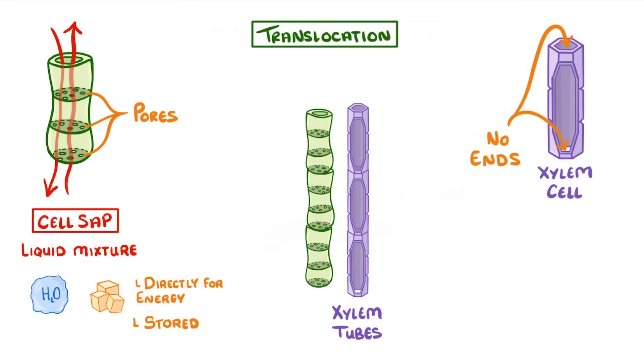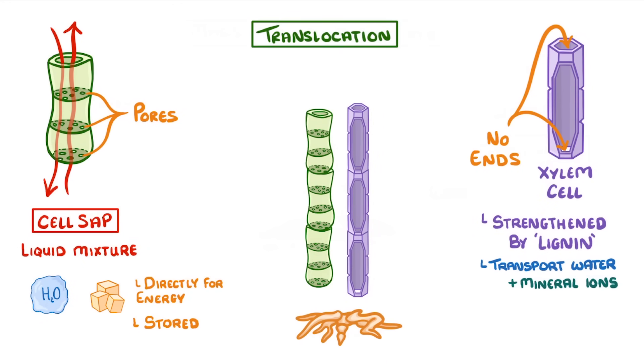So they effectively form one long hollow tube and they're strengthened with a material called lignin. Their role is to transport both water and mineral ions from the roots up the stem to the leaves, where the water can be used in photosynthesis.